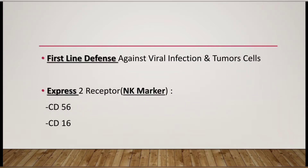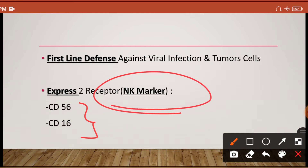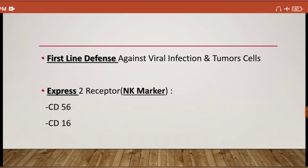As we discussed, the NK cell is a component of natural immunity, so it provides a first-line defense against viral infection and tumor cells. This NK cell has two surface molecules on its surface: CD16 and CD56. Both are known as natural killer cell markers because by flow cytometry of these two surface molecules you can identify natural killer cells.